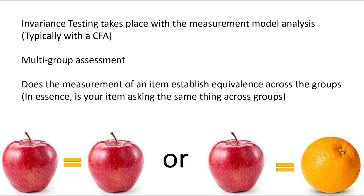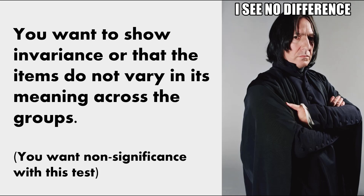Invariance testing really takes place in a measurement model analysis — typically in a confirmatory factor analysis. Invariance is an assessment of multiple groups, looking across groups to see if there's equivalence or variance. In essence, an invariance test tries to establish that your measurement of your items or indicators is equivalent across groups — that you're asking the exact same thing, and those questions mean the same thing across the groups.